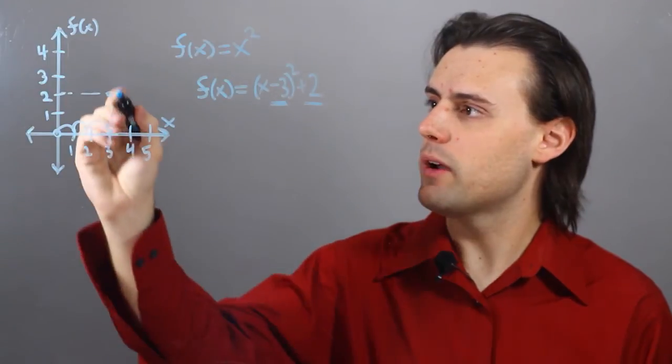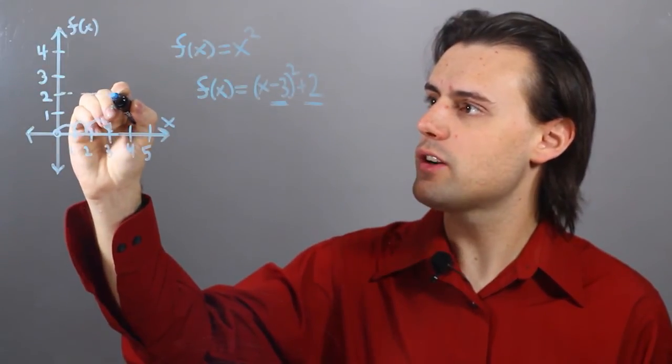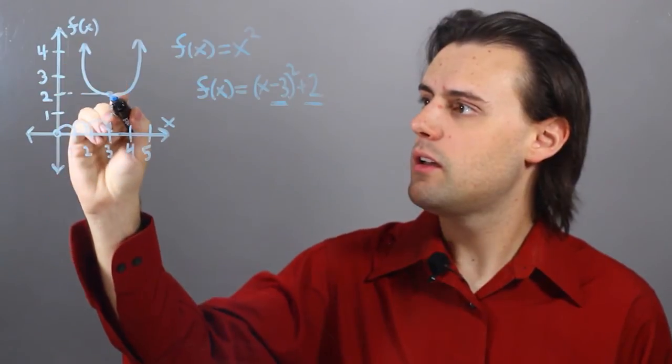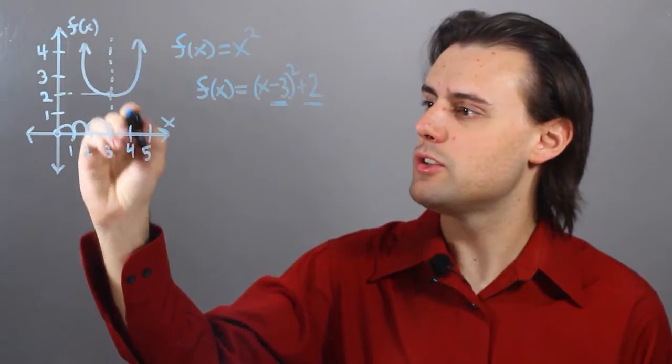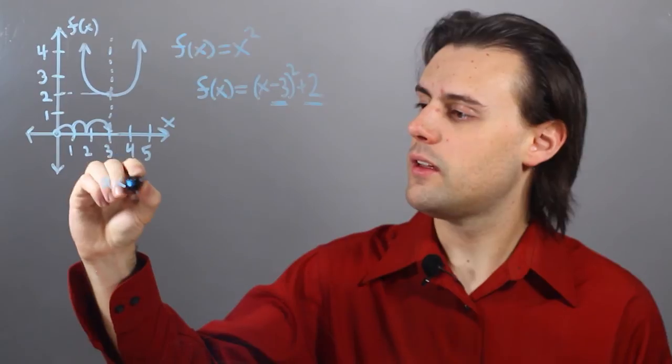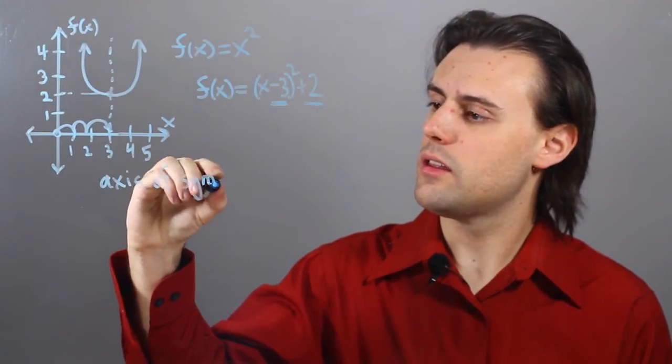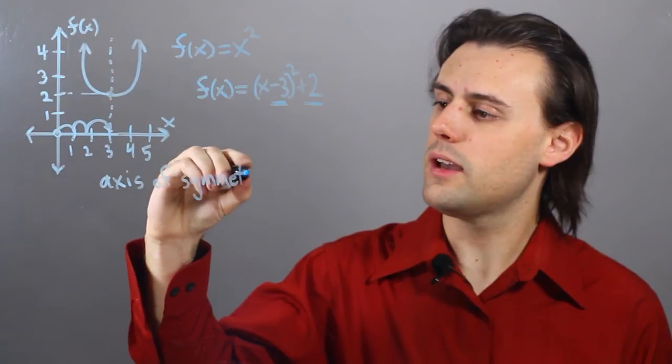So that's going to be my vertex, and then my quadratic function will look like this, where there's an axis of symmetry at the coordinate x equals 3.